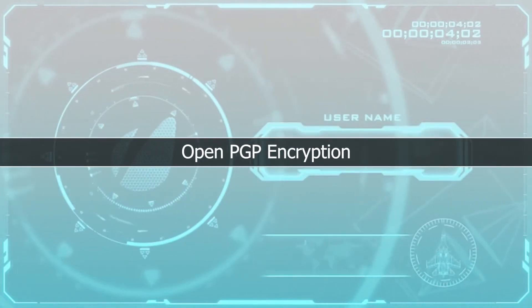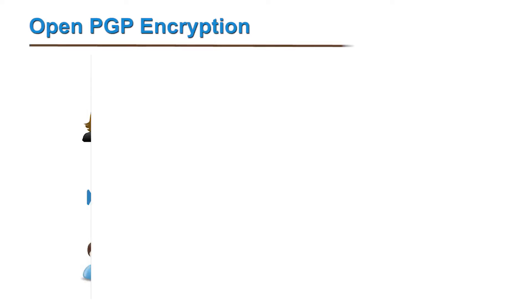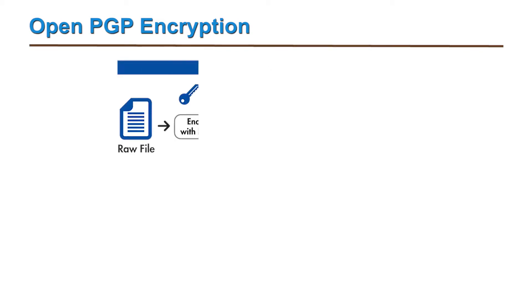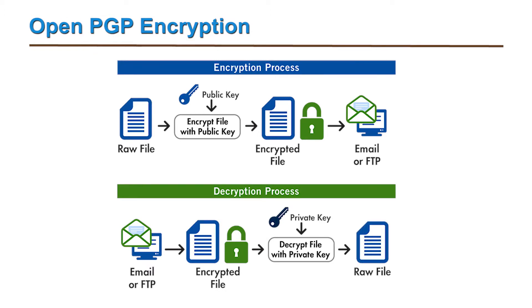These are some of the solutions available. We will discuss one particular end-to-end encryption standard, which is OpenPGP encryption, to see how it basically works and ensures security. OpenPGP is an encryption standard for end-to-end email encryption based on the public cryptosystem. A public key is used to encrypt a file and verify a signature, and a private key is used by the owner or receiver to decrypt and add a digital signature to the file.